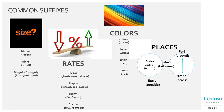These common suffixes relate to size, rate, color, and places. For size: macro means large, micro means small, and megalo or megaly means large or enlarged. The difference between macro and megalo is that macro is stagnant — just large — but megalo or megaly can mean large or getting bigger, enlarged. For example, hepatomegaly means a liver that is enlarged. Hyper means high, elevated, or above. Hypo means low, reduced, or below. Tachy is fast or rapid, and brady is slow or reduced.